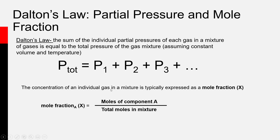The concentration of an individual gas in a mixture is typically expressed using a unit called mole fraction, abbreviated with a capital X. Mole fraction is a particularly important concentration measurement for gas phase chemistry because, since gases can expand and contract with the volume of their surroundings, it makes more sense to talk about how much of a gas there is in terms of the moles of that gas compared to the total number of moles of all gases. A mole fraction X is equal to the moles of the chemical of interest divided by the total moles in the mixture.